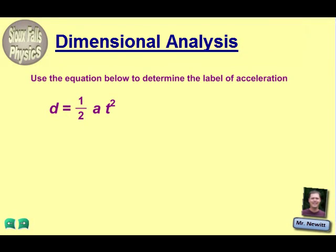Okay, here's our second example of dimensional analysis. This is: use the equation below to determine the label for acceleration, acceleration being noted with the script A there. So we need to think about what are the labels for D and T that are in our equation. Well, D stands for distance, so if I'm thinking about the distance, that is going to have a label of meters.